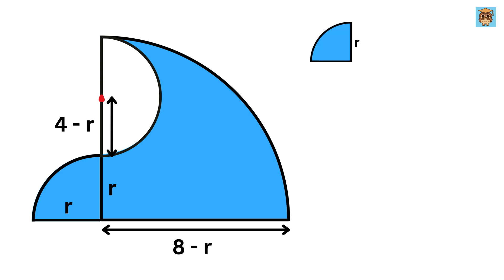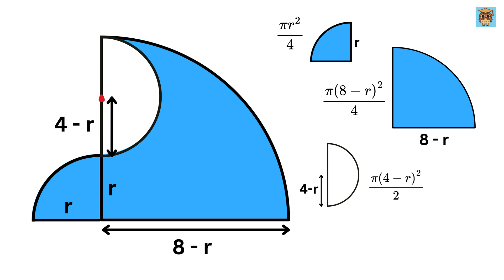So, for this case, the area of this quarter circle will be simply pi r square over 4. Then the area of this quarter circle will be simply pi times 8 minus r whole square over 4. And the area of this semicircle will be equal to pi times 4 minus r whole square over 2.